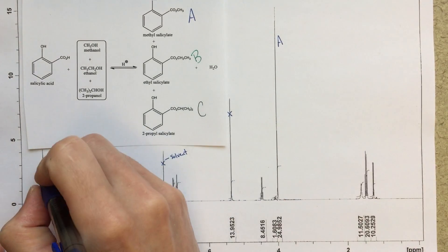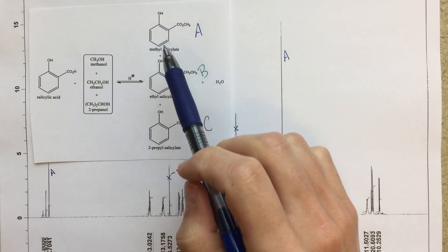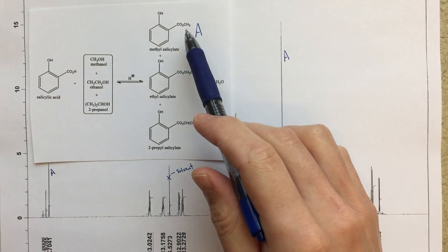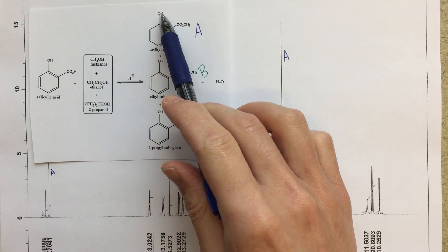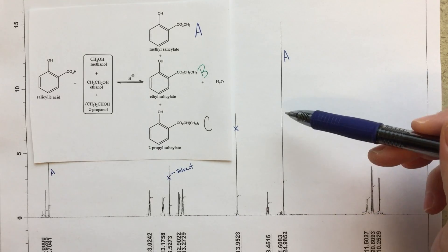So right away, I'm sort of thinking to myself, well, this integrates to three, and one of these should integrate to one versus this integration of three. So I think that, right away, I can say that this tall peak here, that's also going to be for this methyl product, because I've got my methyl group here, should integrate three to one.